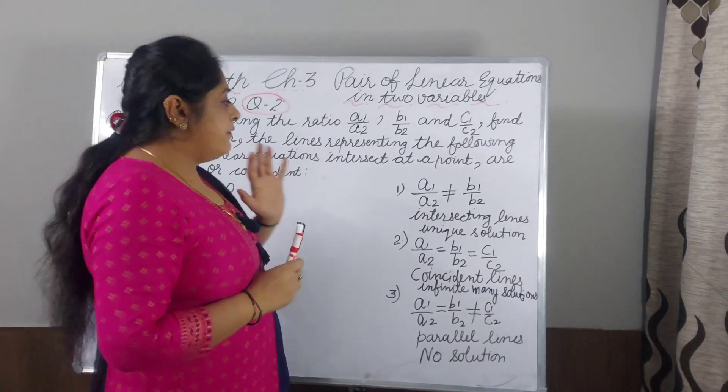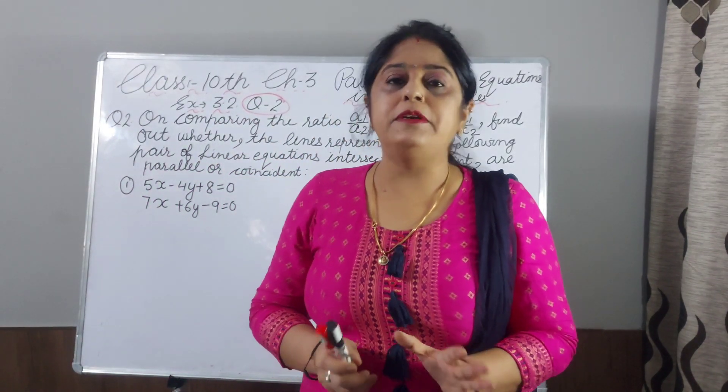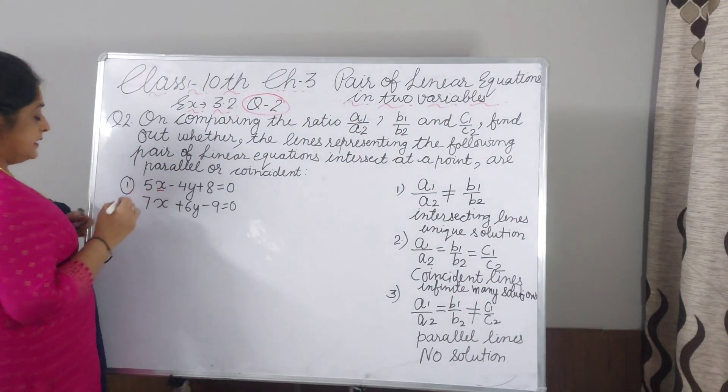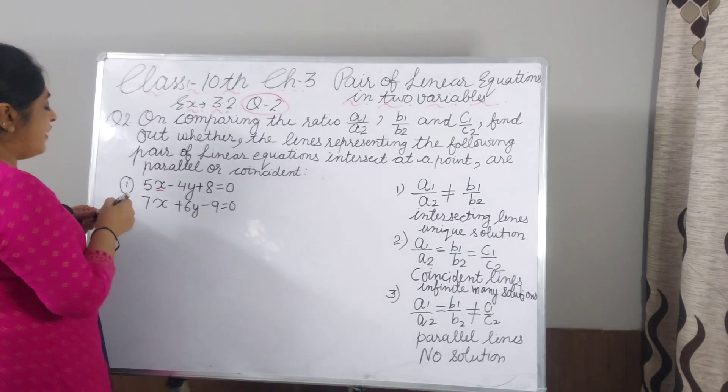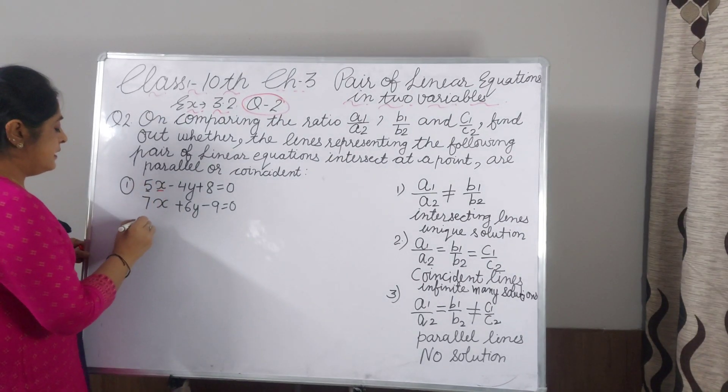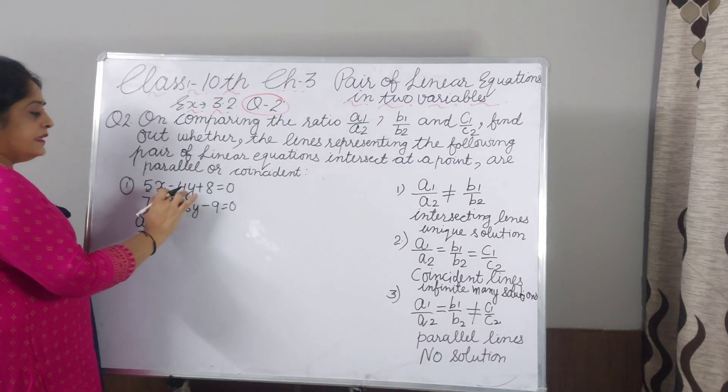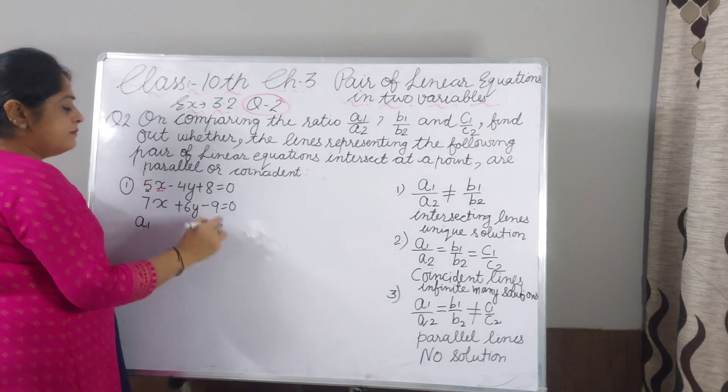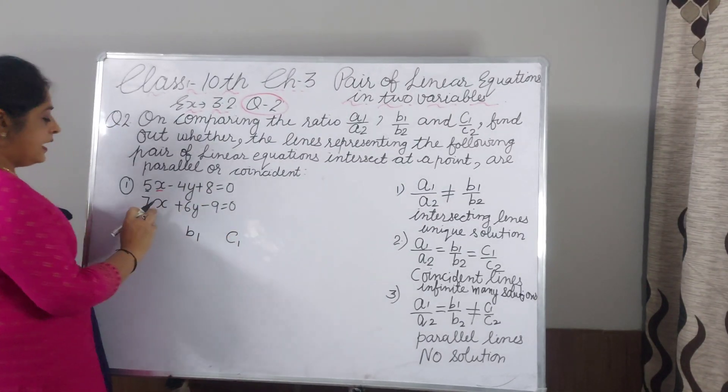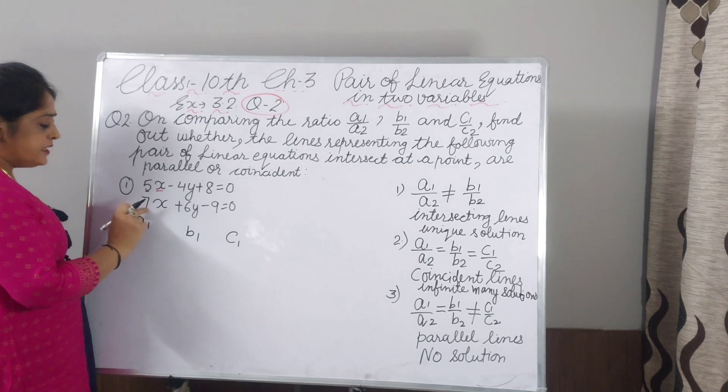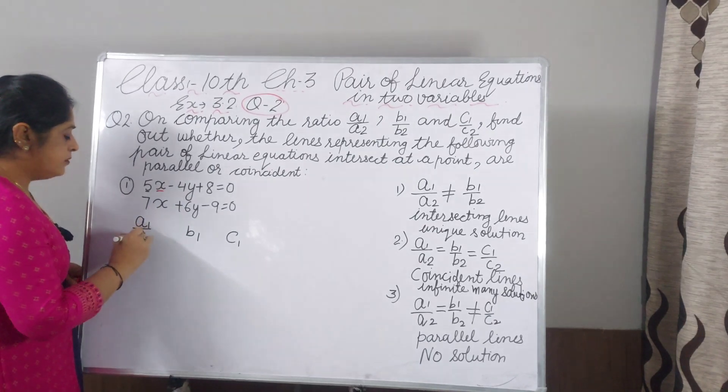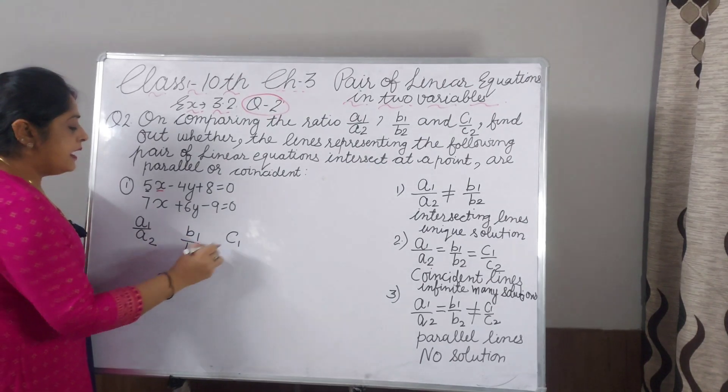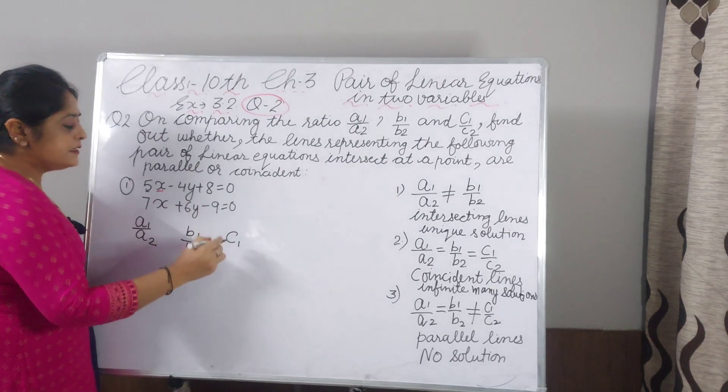Now, first I will tell you what is A1, A2, what is B1, B2 and what is C1, C2. Coefficient of x, that is 5, that is A1. And this coefficient of y, that is B1, and constant term is C1. And now second equation, this coefficient of x is A2, coefficient of y is B2, and this constant term is C2.